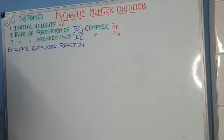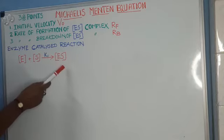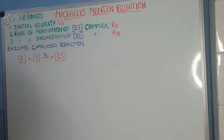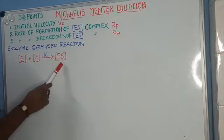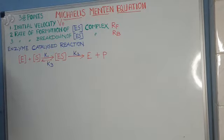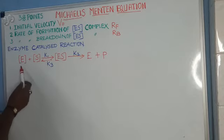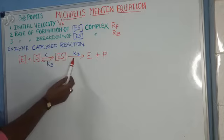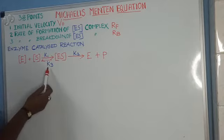Let us start with the enzyme-catalyzed reaction. The enzyme and substrate react to form the ES complex. You have to write this with square brackets because square brackets represent concentration. A particular concentration of enzyme reacts with a particular concentration of substrate to form the ES complex at the rate of K1. The formed ES complex can dissociate in two ways: into enzyme and product, or back into enzyme and substrate.